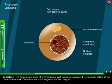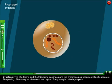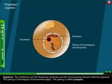Zygotene: The shortening and thickening continues and the chromosomes become distinctly apparent. The pairing of homologous chromosomes begins. The pairing is called synapsis.